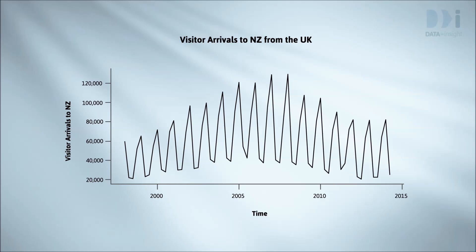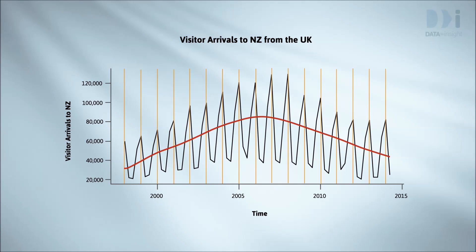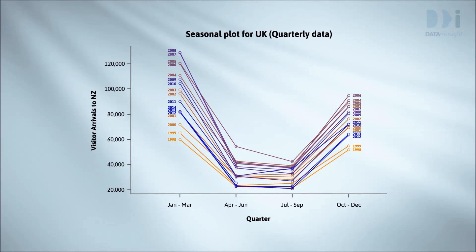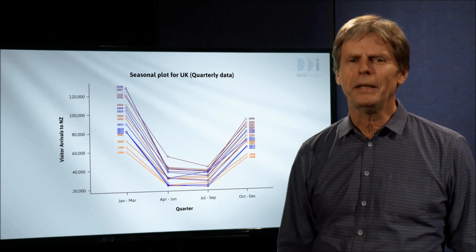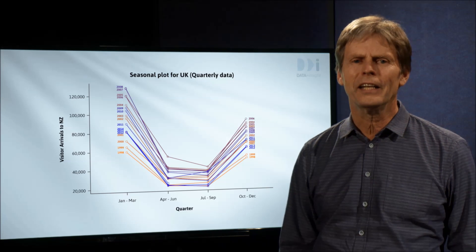The major things we see now are an overall trend and the sawtooth. I'll draw in a vertical line at the position of each year. There's a basic pattern that repeats every year — we call such patterns seasonal patterns. We can see it better here, where we've plotted the data against quarter with a separate line for each year. Every year the visitor numbers are biggest in the January to March quarter, New Zealand summer months, and lowest in the April to June and July to September quarters, New Zealand winter months.